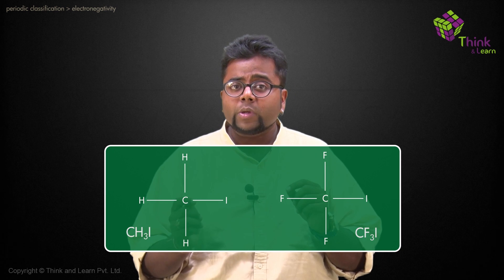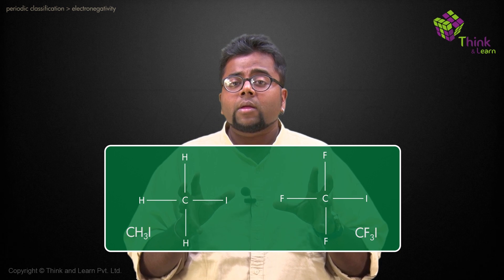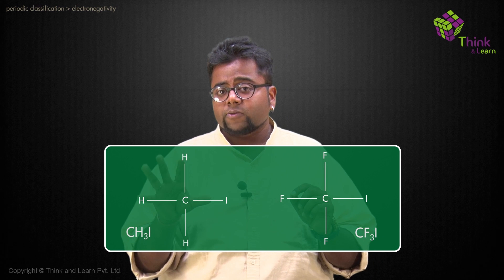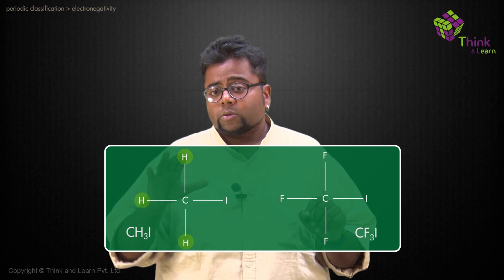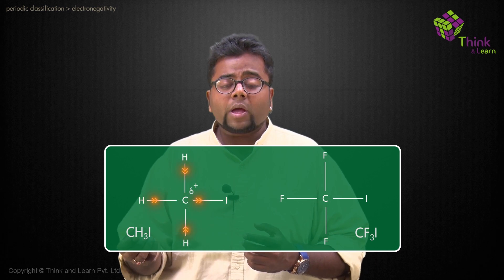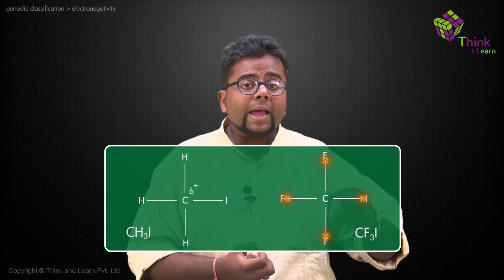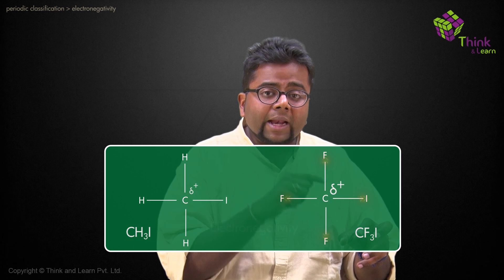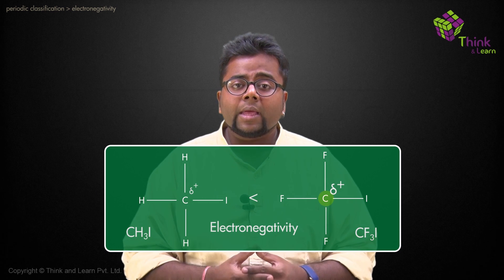The last factor on which electronegativity depends is the neighboring atoms. For example, comparing CH₃I and CF₃I — in CH₃I, the three hydrogen atoms are less electronegative than carbon, whereas in CF₃I, three highly electronegative fluorine atoms pull electron density away from carbon, making carbon short of electrons. So the electronegativity of carbon in CF₃I is more than in CH₃I. This shows how surrounding atoms make a huge impact on electronegativity.